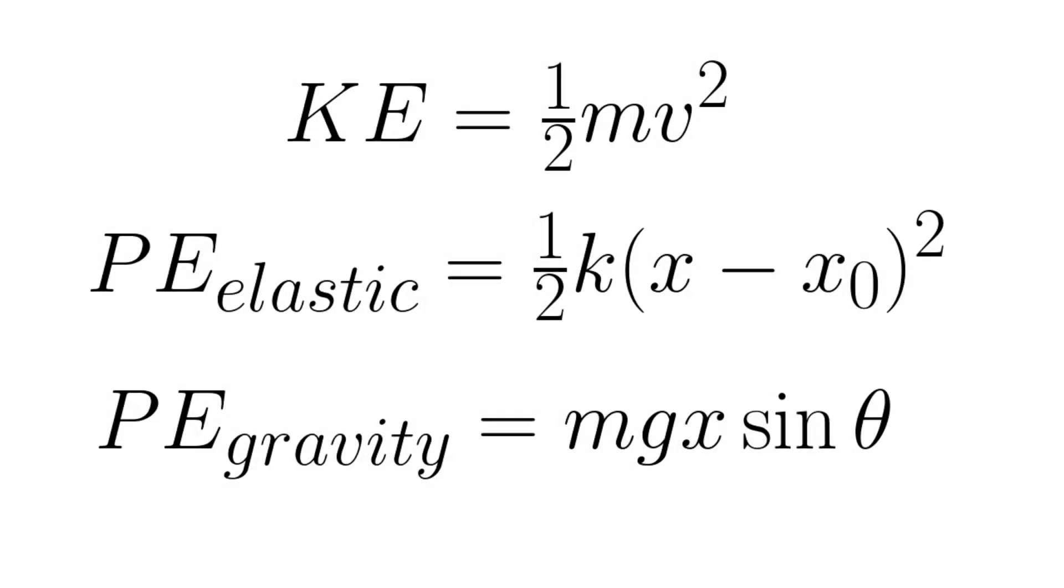Now that we have all these measurements and sensors, we can calculate the kinetic and potential energies of the cart at any point on the track. Almost. We still need the stiffness constant of the spring, k, and the equilibrium position of the spring, x0, or the position at which the force is zero.